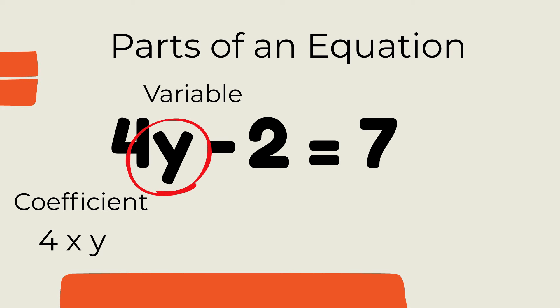The y is the variable, which is a symbol for a value we don't know yet. If there is not a coefficient in front of the variable, then you can assume it is 1.